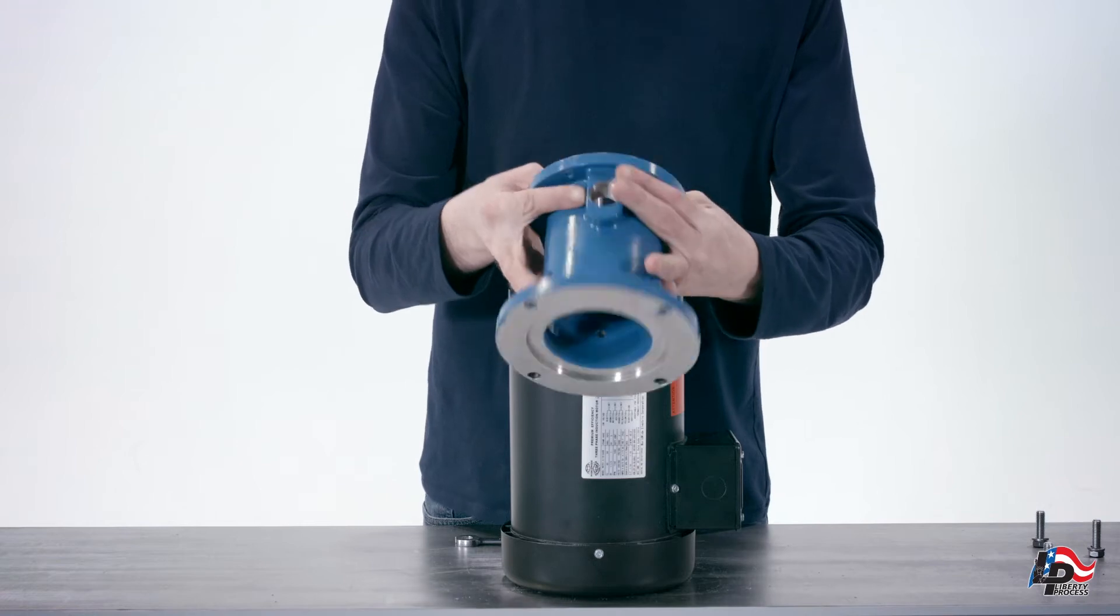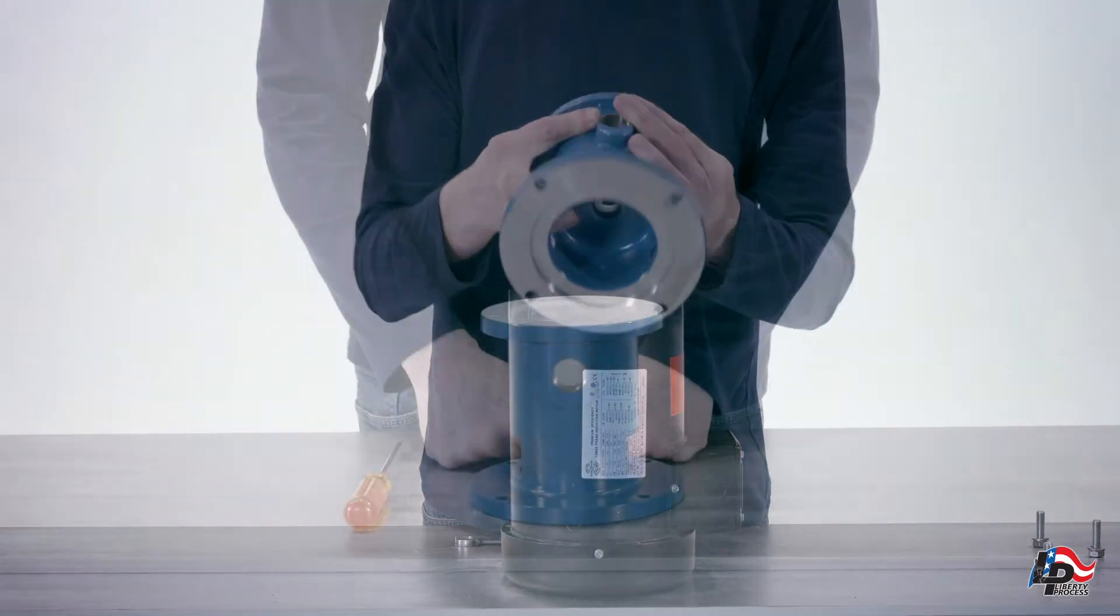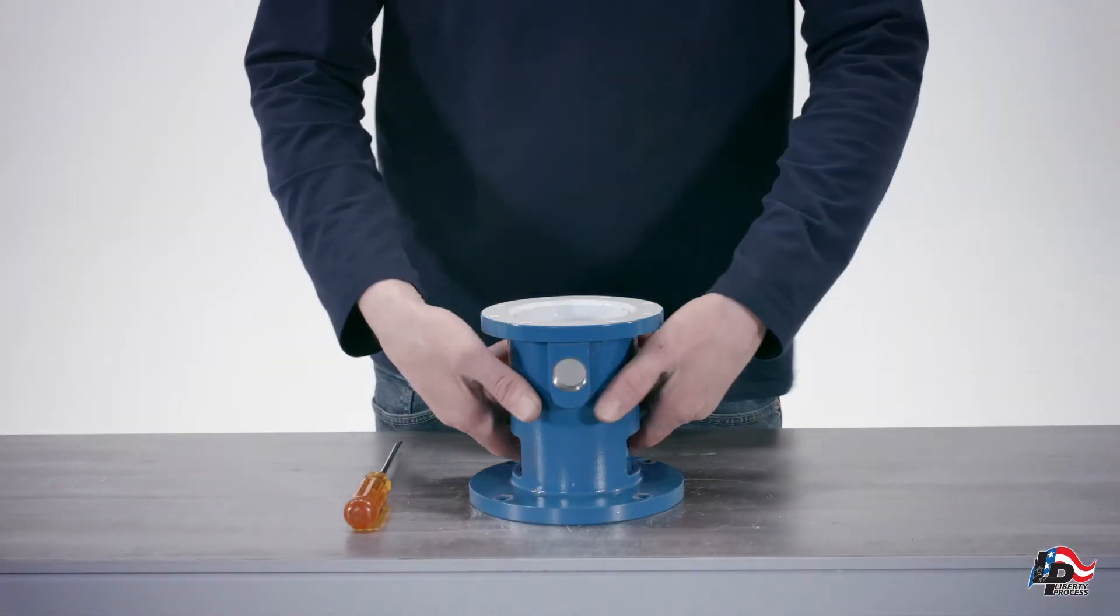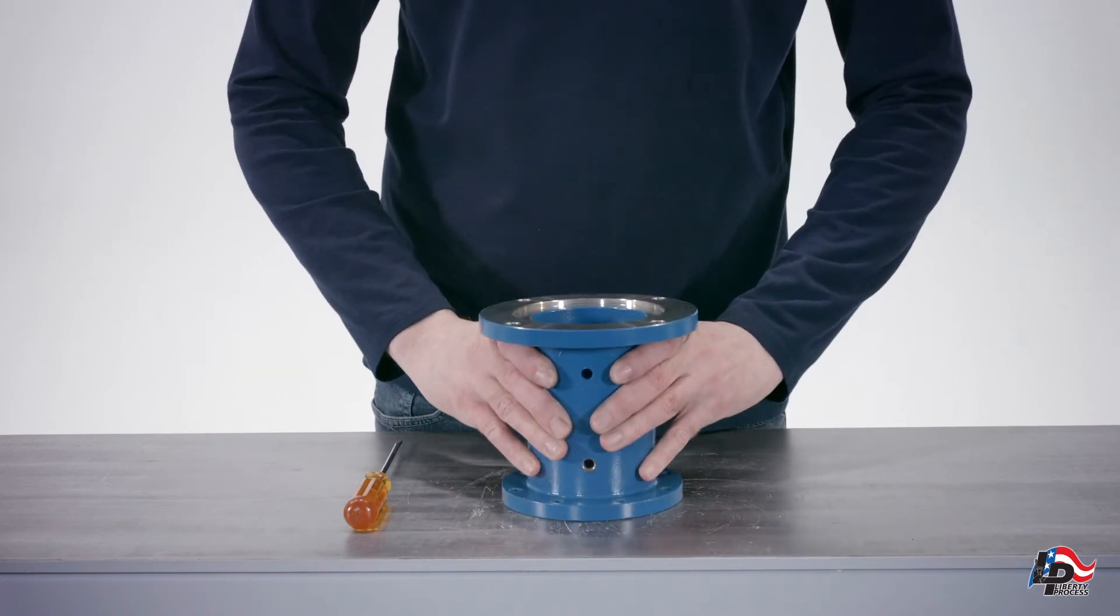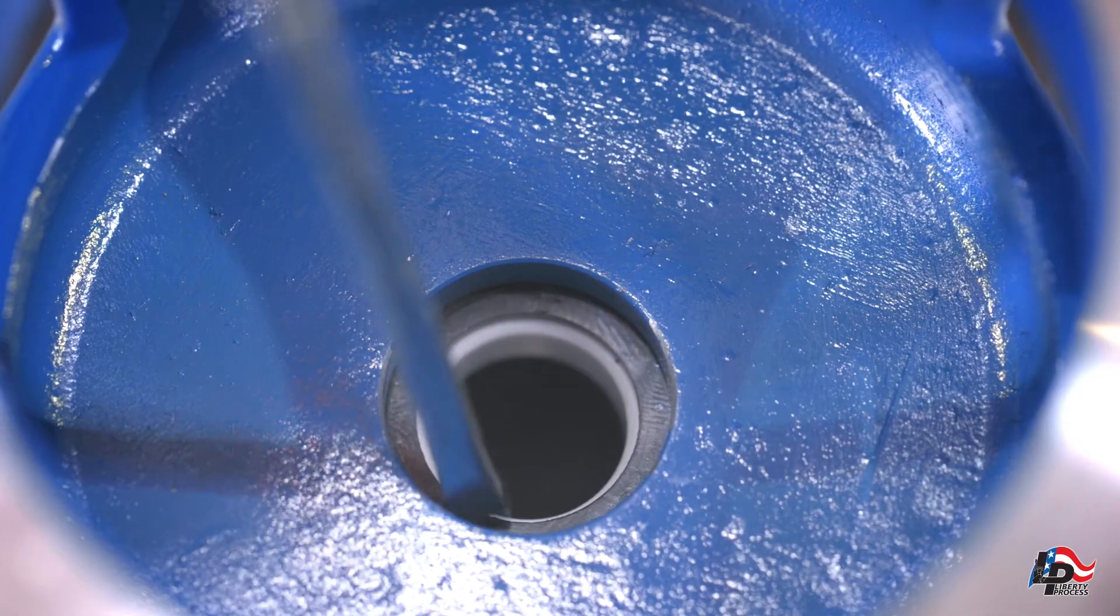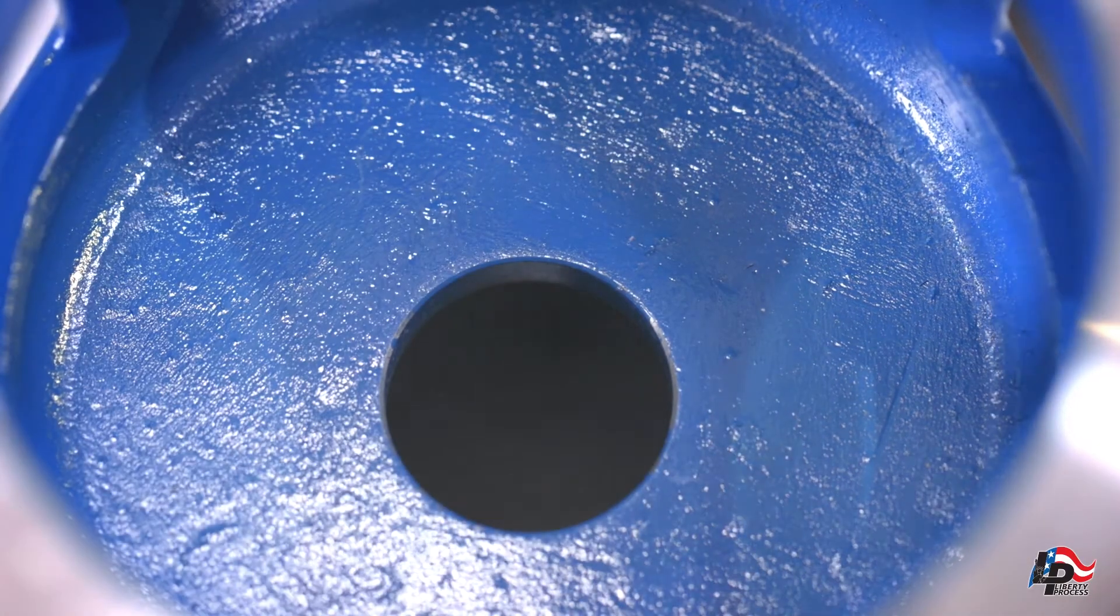To remove the stationary face of the mechanical seal from the pump discharge casing, turn the pump discharge casing over. Using your fingers, press out the stationary face of the mechanical seal. If it remains stuck, use a flat-bladed screwdriver to gently pry it loose.